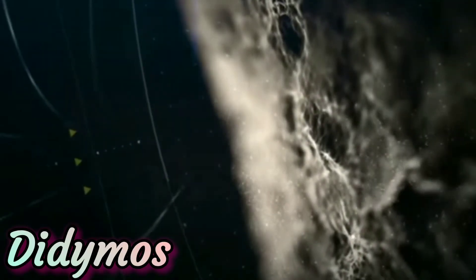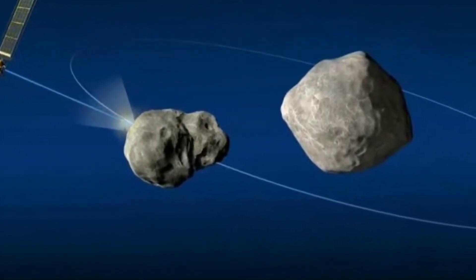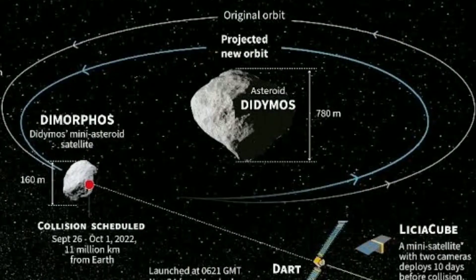So what are the expected outcomes of this impact? Dimorphos is a moon asteroid of Didymos. Currently, it is at a distance of 7 million miles from us. Dimorphos orbits Didymos in an elliptical orbit. The goal of the crash was to push the mini-asteroid a little closer, thereby making its orbit a little smaller.